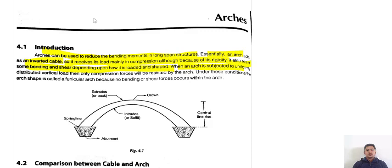When an arch is subjected to a uniformly distributed vertical load, then only compression forces will be resisted by the arch — only compressive forces, no tensile loading will be resisted. Under these conditions, the arch shape is called a funicular arch because no bending or shear force occurs within the arch.